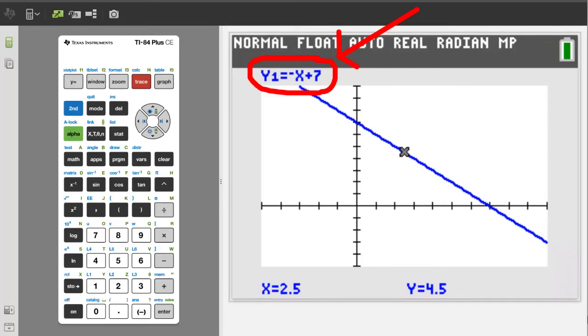The equation of the line is here. We can trace along the line with this blinking cursor by using the arrow buttons. Right now the blinking cursor is at the point x equals 2.5 and y equals 4.5.